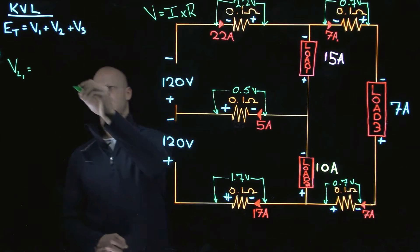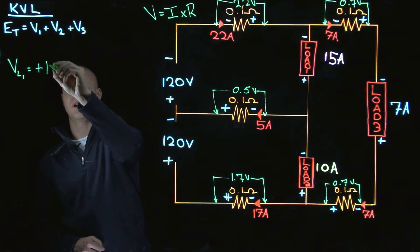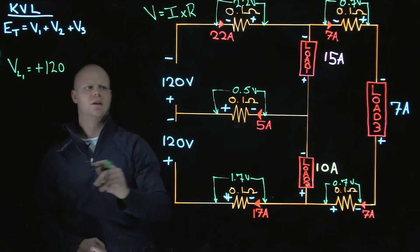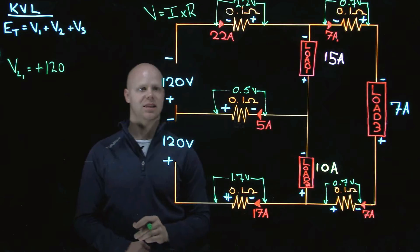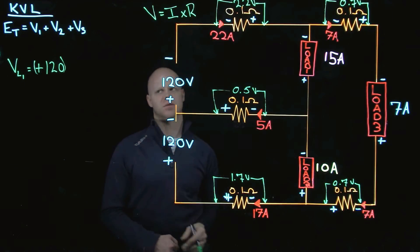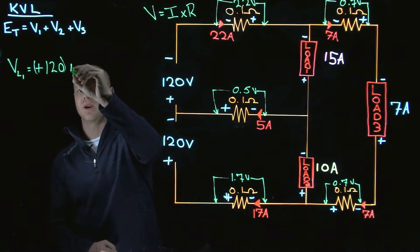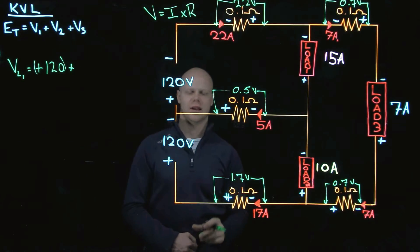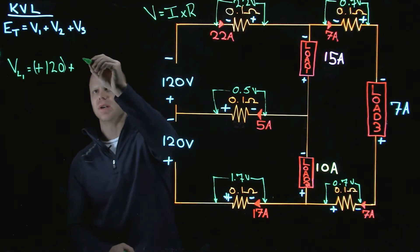So I am going to say positive 120, and remember we are adding these together. If you need to put these in brackets to remember that that's individual values, that's fine.